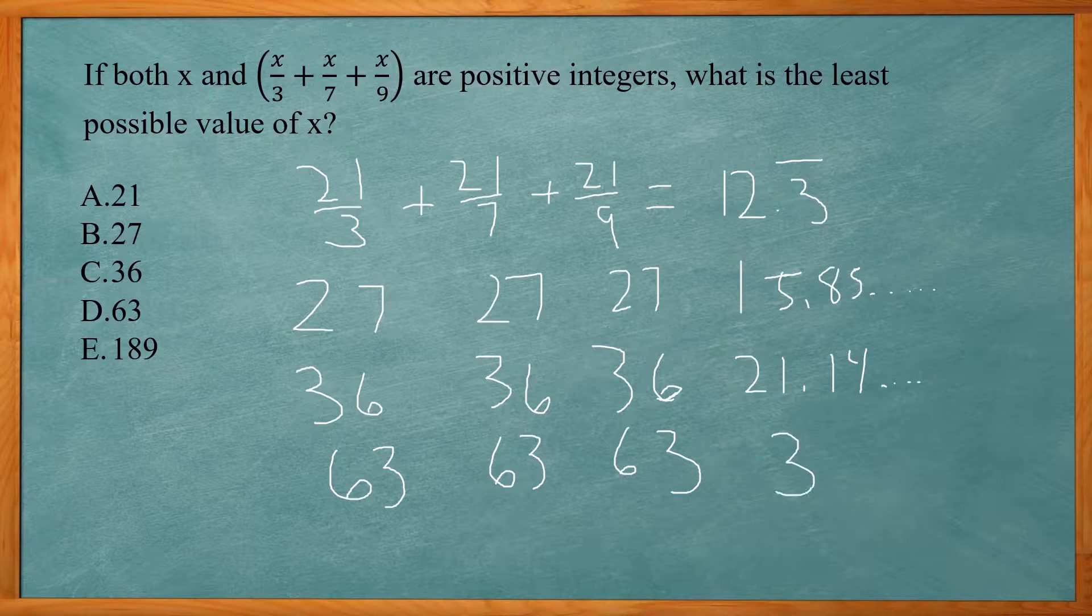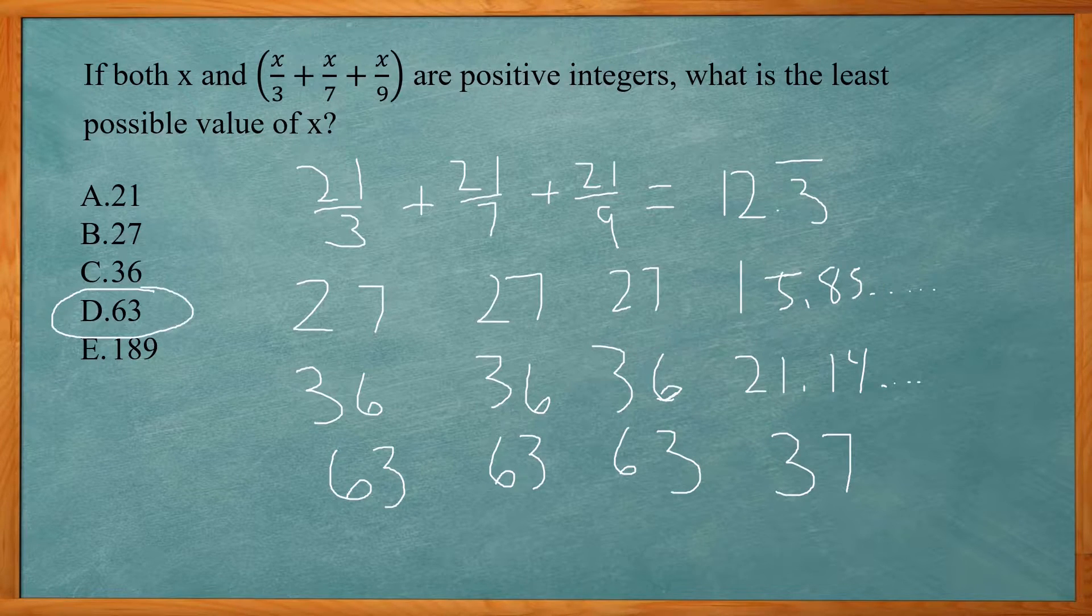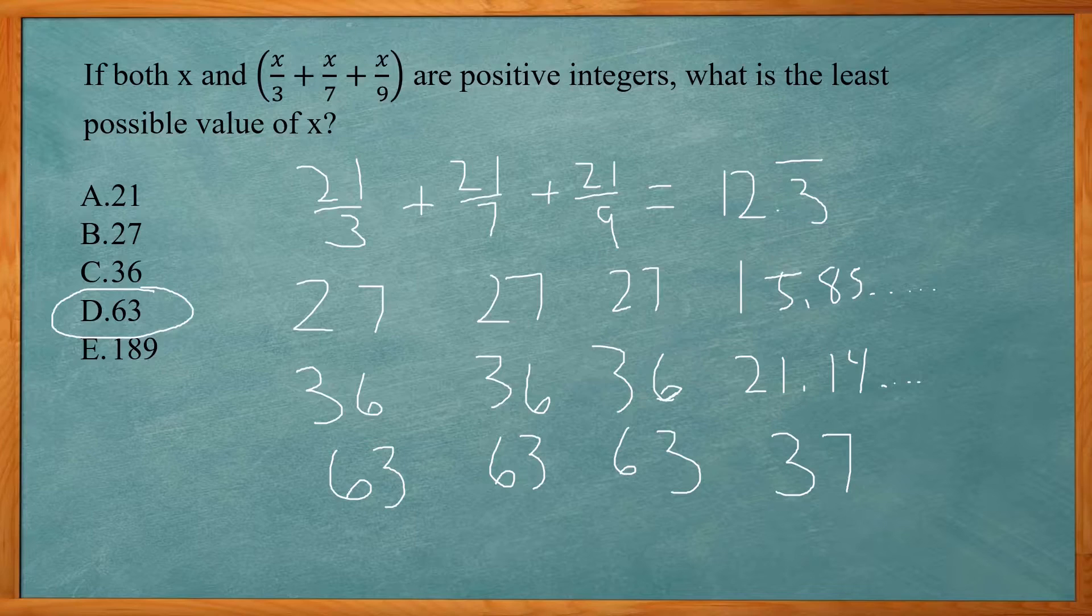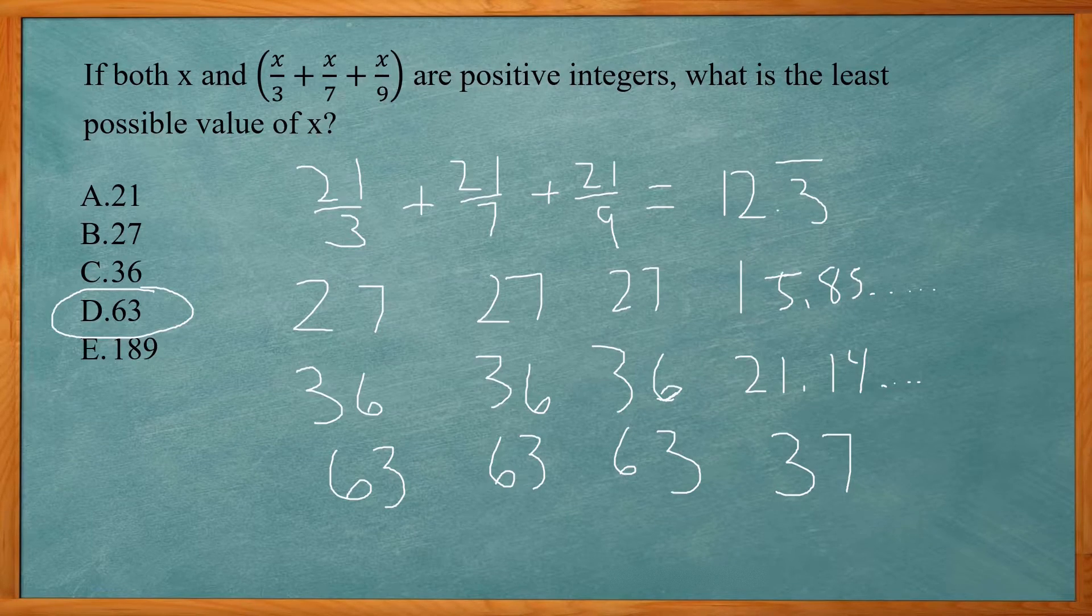And we get 37. So we get an integer for that one. So our answer is choice D, answer choice D is correct for 63. And really what we end up finding is the least common multiple of 3, 7, and 9. But if you didn't know that, then you can just plug in the answer choices. That's another way to solve it.